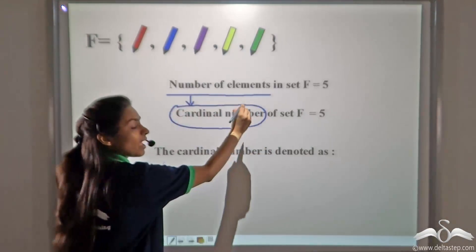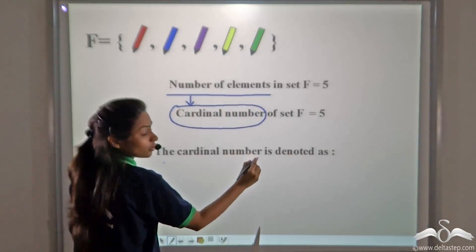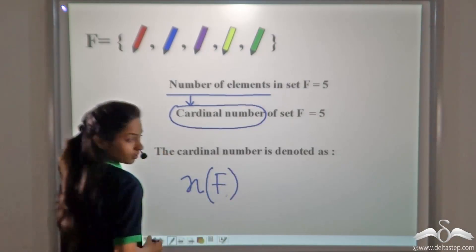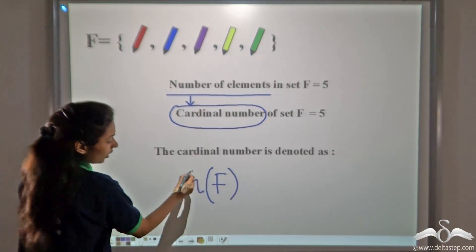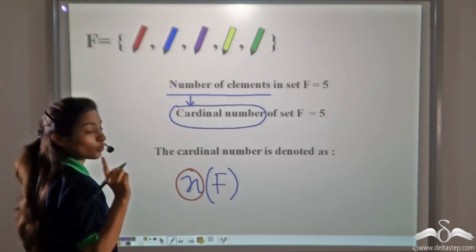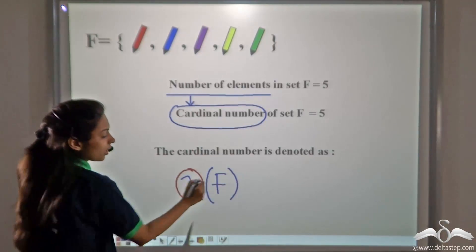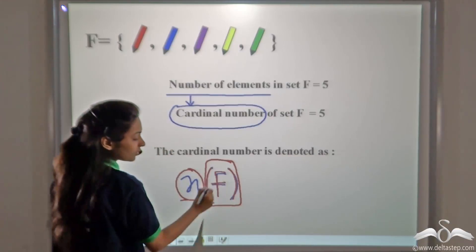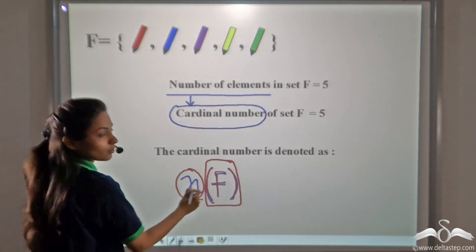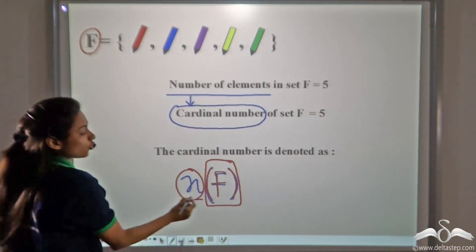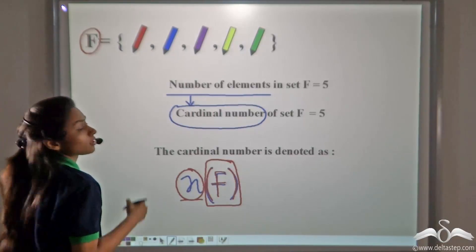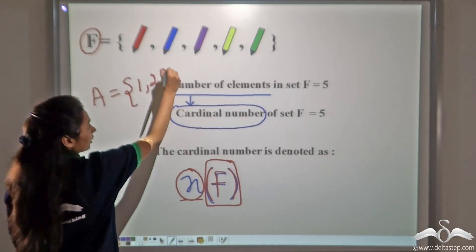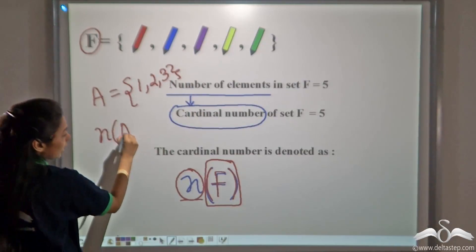Cardinal number means number of elements. The cardinal number is denoted as n(F). Here, n denotes the number of elements — note that we will always use the small letter n. In the brackets, we write the name of the set for which we are finding the number of elements. Here the set is F, so we write F. For example, if it were set A = {1, 2, 3}, we would write n(A).